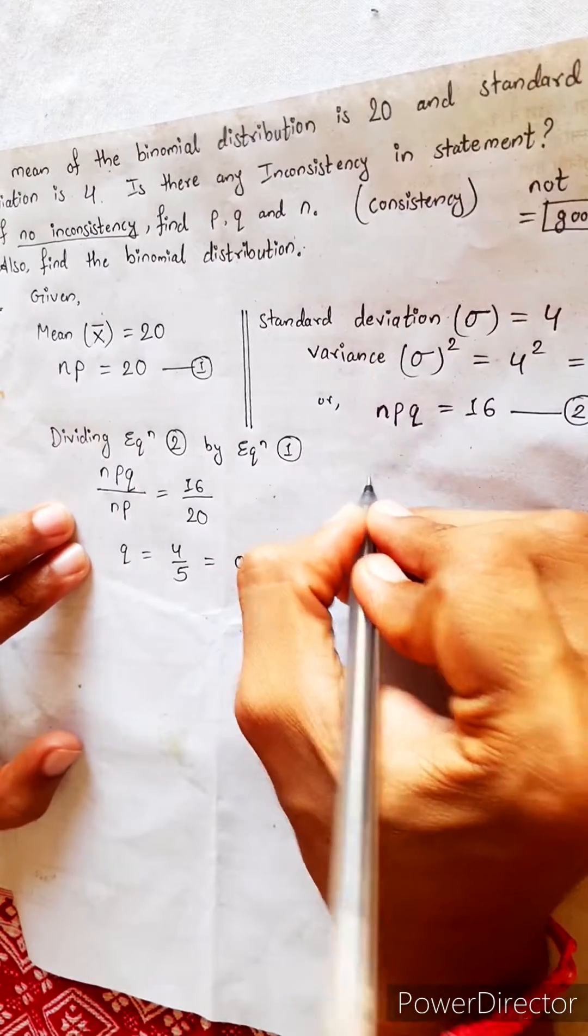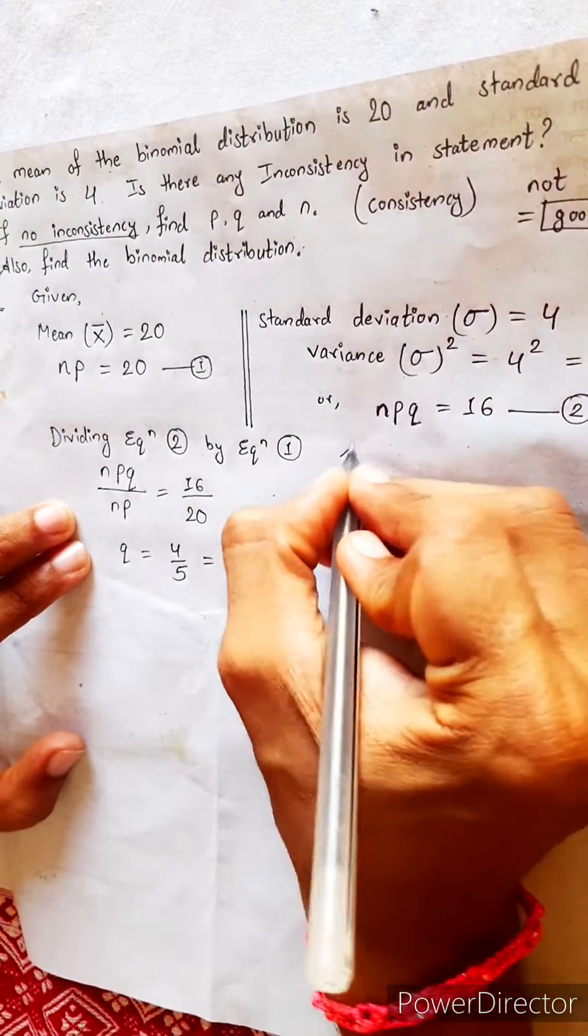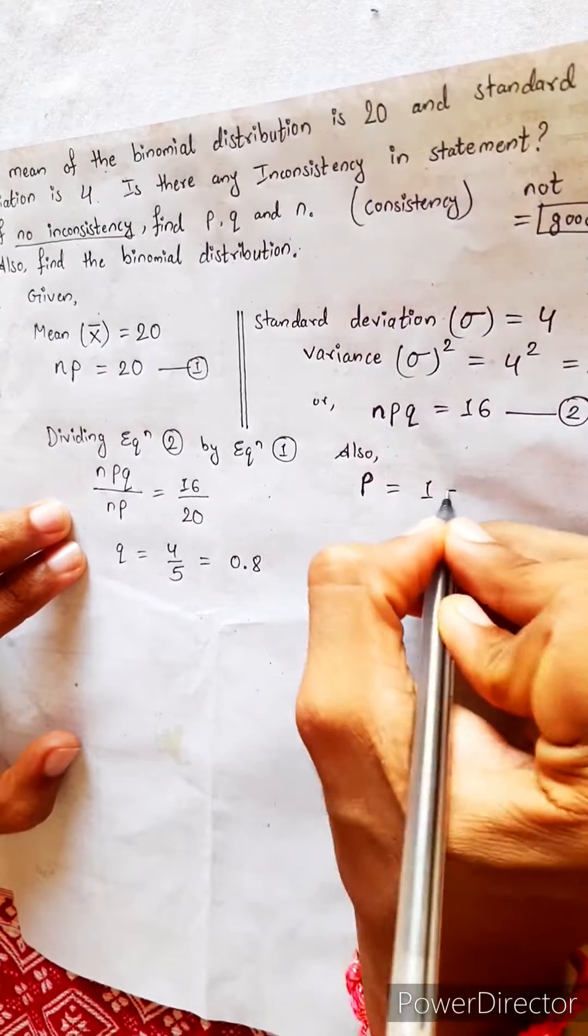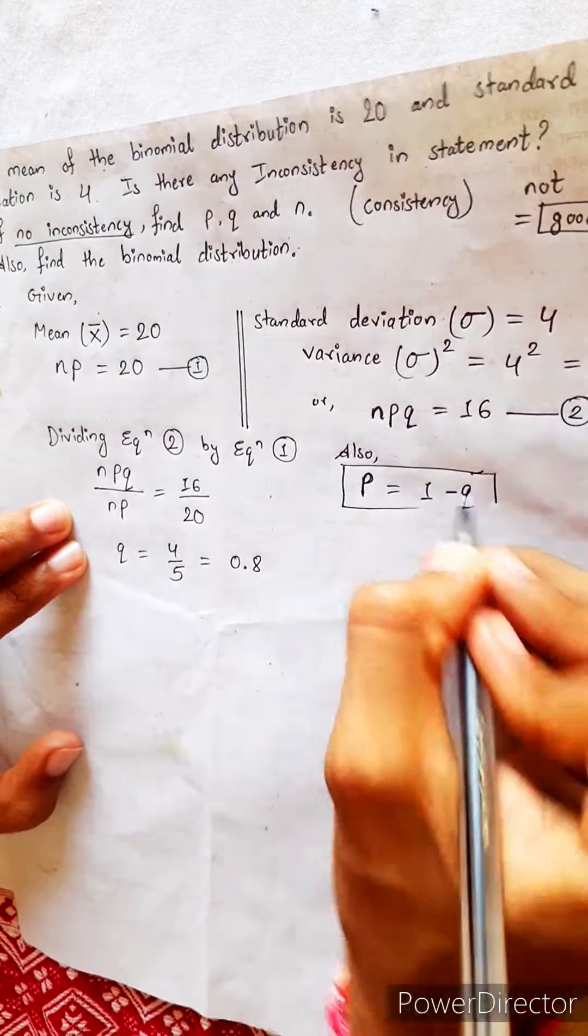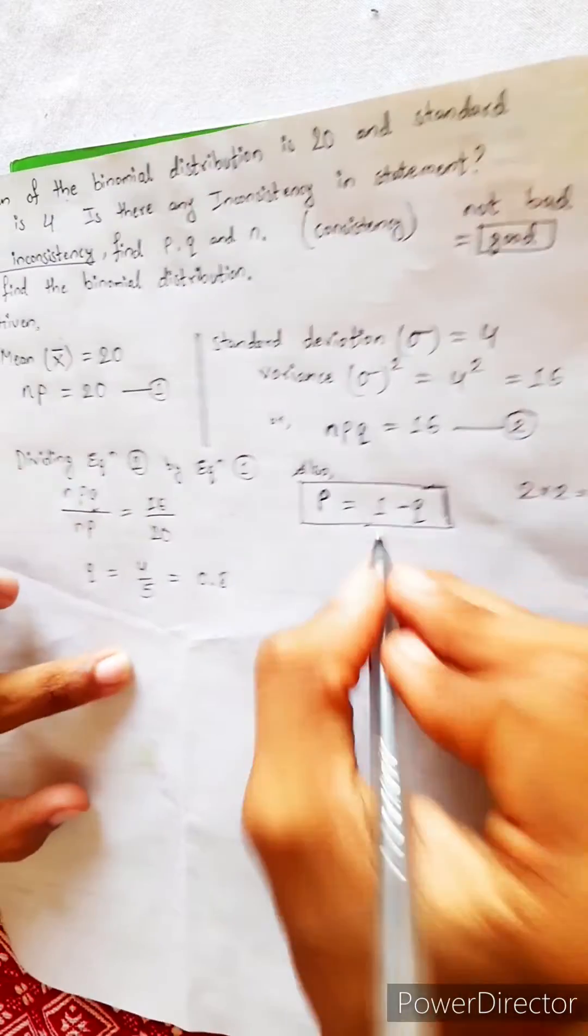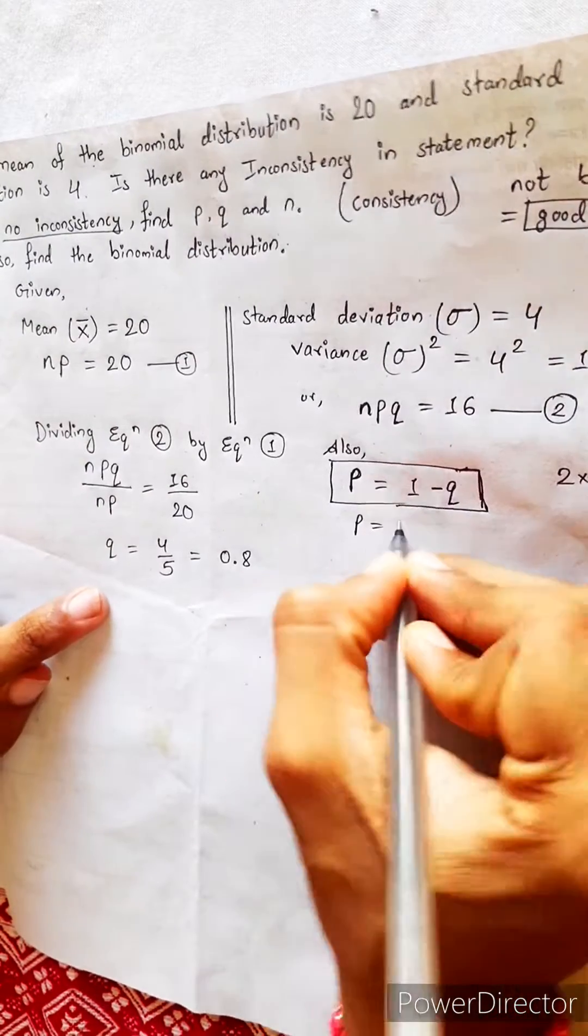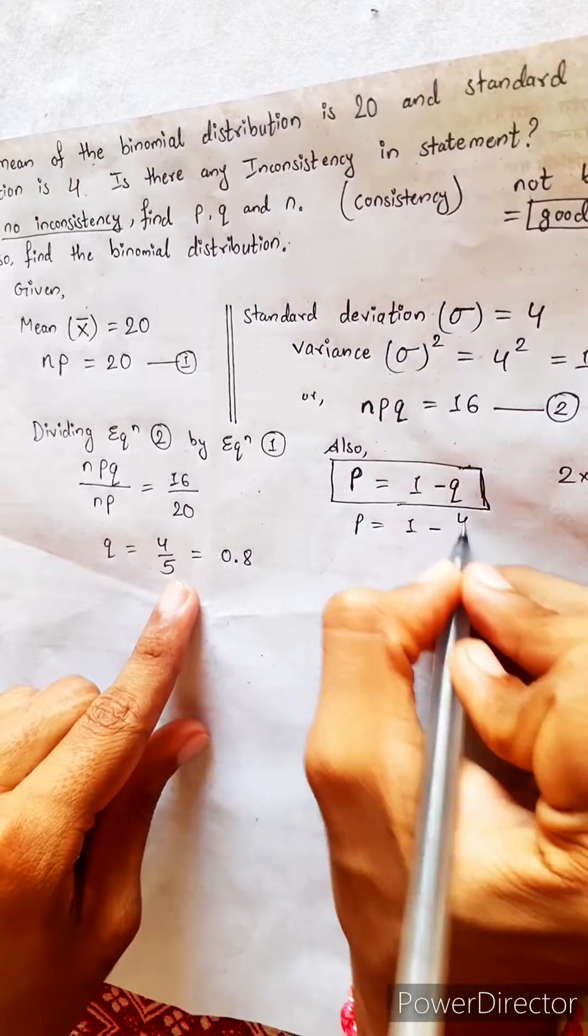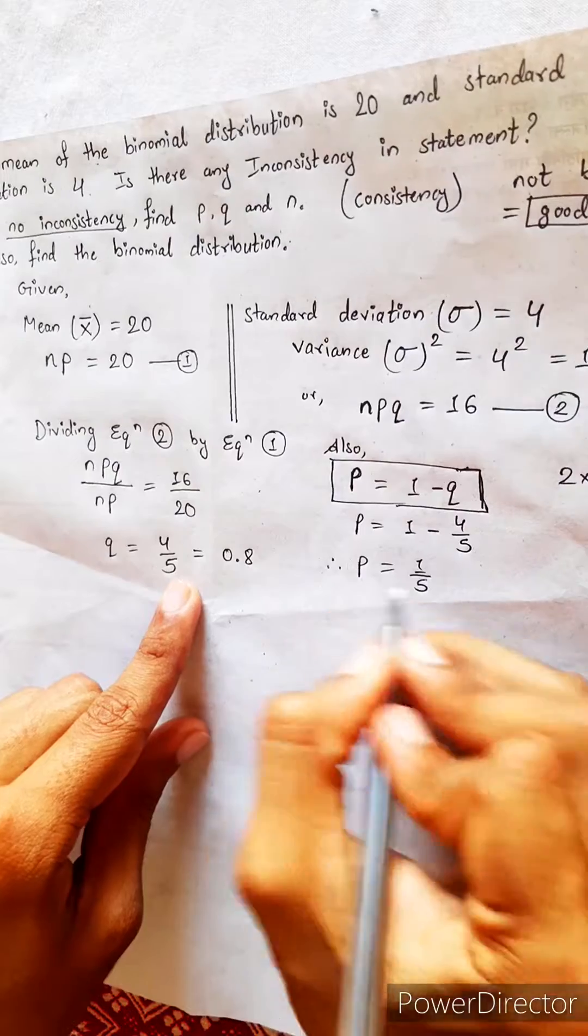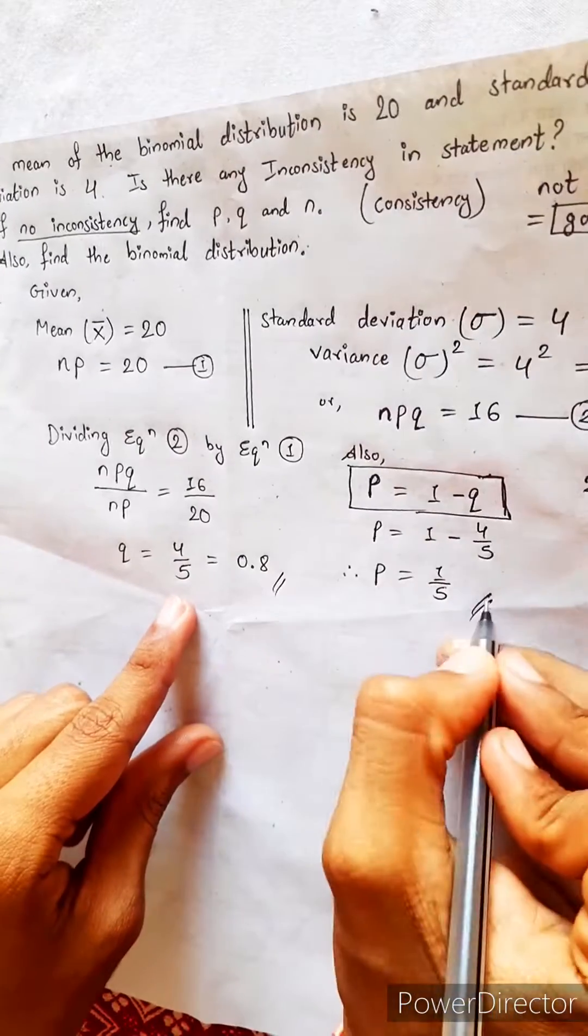We have to find P also. Write here also. Formula of P equals to 1 minus Q. This is formula. From where this came, don't ask. This is just formula. Similarly, like 2 into 2 equals to 4. How 4? This is formula. So, don't ask. P equals to 1 minus Q means 4 by 5. This will be 1 by 5. Solve in calculator. Therefore, we got P also. Q also.